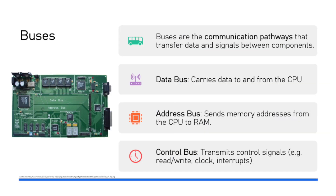The next critical components are buses. Buses are used to transfer data between various devices including the CPU, memory, storage, and various peripherals — you can think of them as communication pathways. Buses have widths measured in bits, and the bigger the width of the bus the more data it can transmit at one time. There are three main buses: the data bus, the address bus, and the control bus.